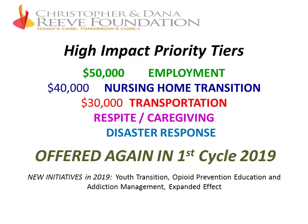The High Impact Priority Tiers will be offered again in the first cycle of 2019. They include a $50,000 grant for employment, $40,000 grants for nursing home transition, and $30,000 grants for nursing home transition. New in 2019, topics being added will include youth transition, opioid prevention education, addiction management, and an expanded effect tier.